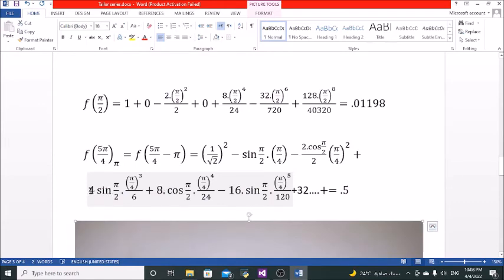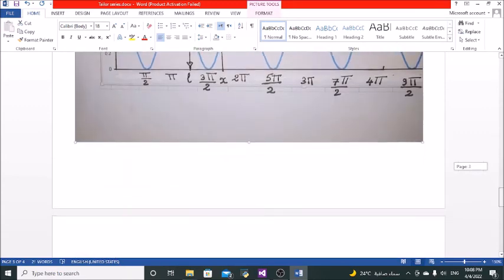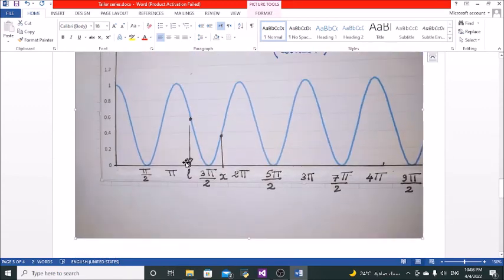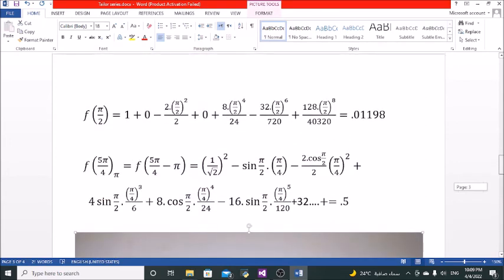Here, for example, I made trials for obtaining sine 5 pi over 4. This is pi plus 1 fourth pi. This equals 225, actually 225 degrees in the third quadrant.